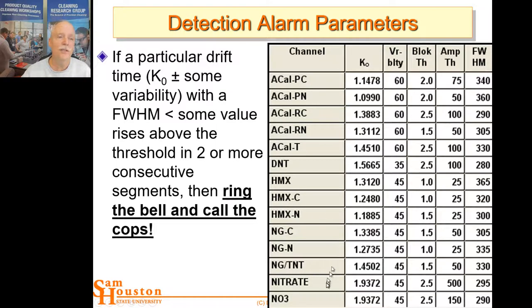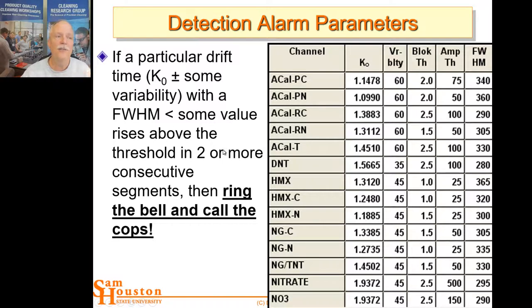These are the drift times used to detect different types of explosives, with uncertainties associated with each. If a particular drift time — plus or minus some variability — shows up with a full-width at half-maximum that meets the set criterion and appears in two or more consecutive segments (meaning it wasn't just a glitch), then you can trigger an alarm and call security because you've detected that explosive.